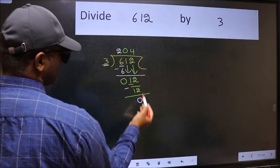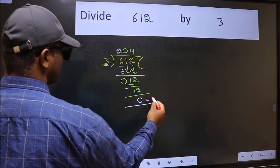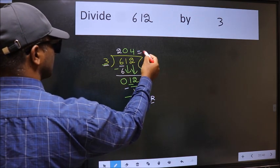No more numbers to bring it down. So we stop here. This is our remainder and this is our quotient.